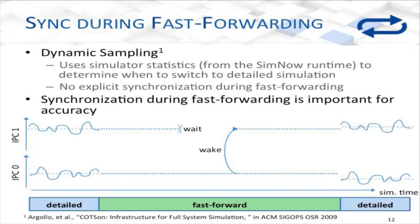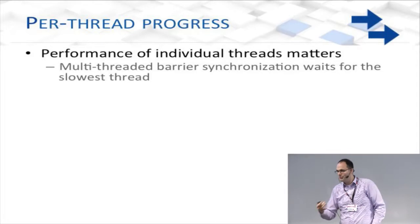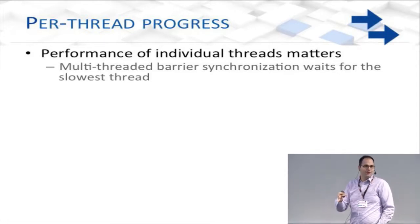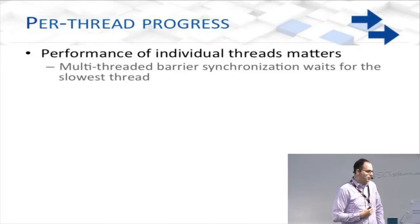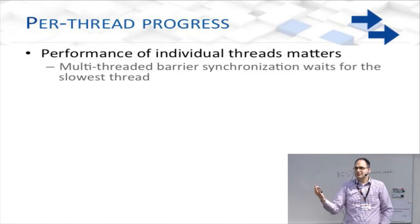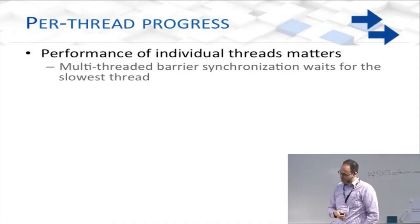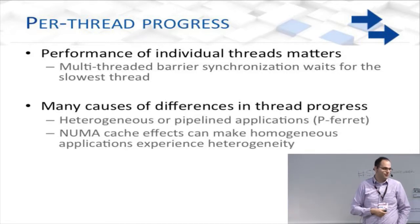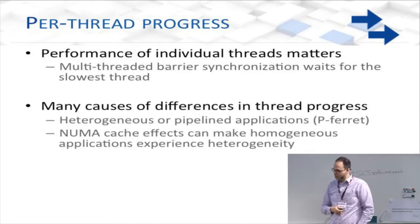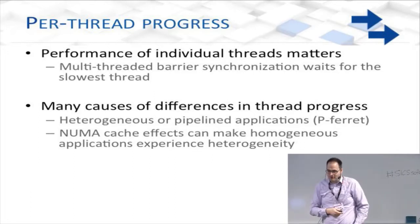Per-thread progress: when we have barrier synchronization, you now need to wait for the performance of every single thread. If you're running an OpenMP application and one thread is lagging behind, that matters to the overall performance of your system. You can have NUMA effects, and pipeline applications will also see this effect. Now, this is the most interesting part of this work — I'm going to slowly build up sampling error.